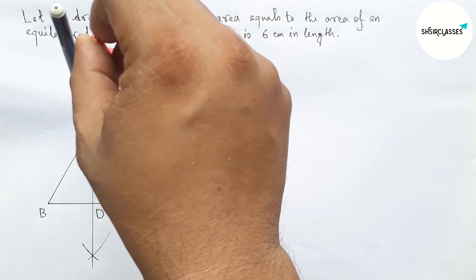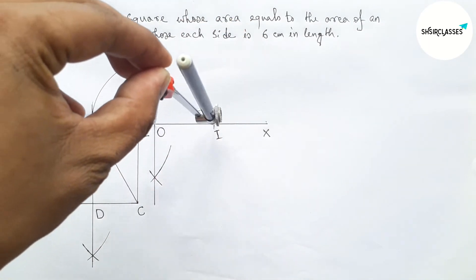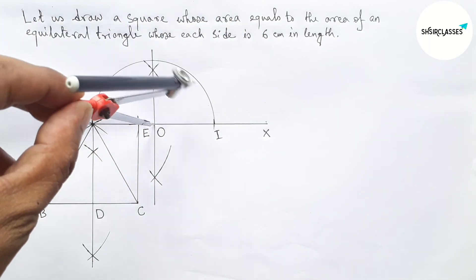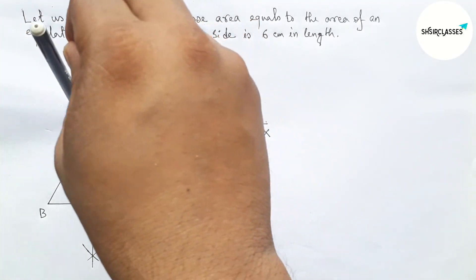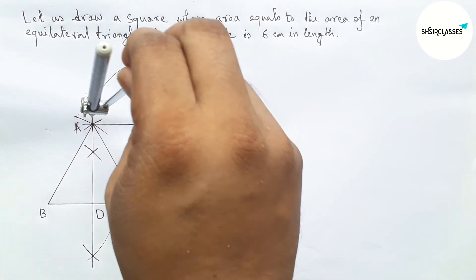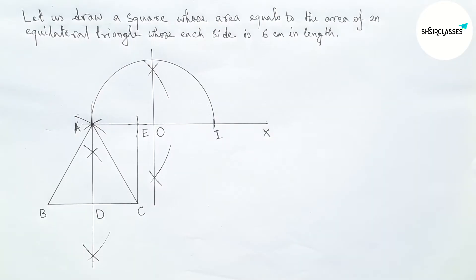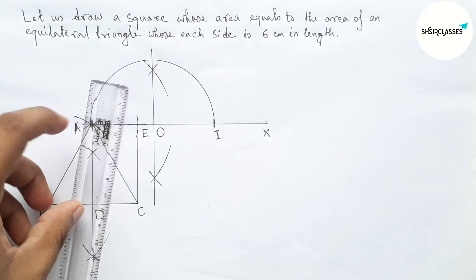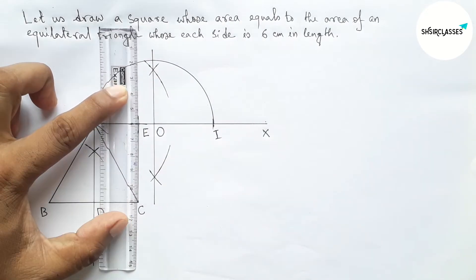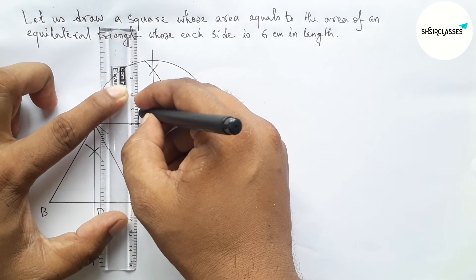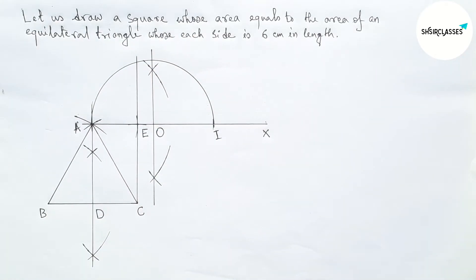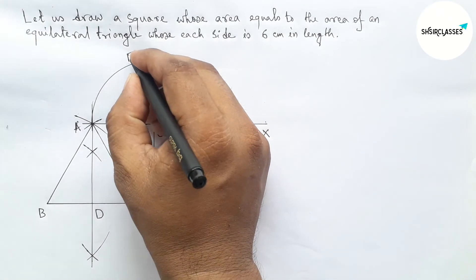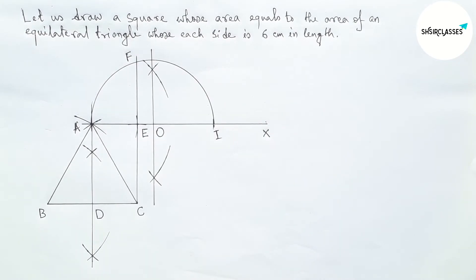Next, measuring OI and OA to draw a semicircle. Drawing a semicircle from point A to I with center O. Then extending the line EC which meets the semicircle here, taking that point as F.